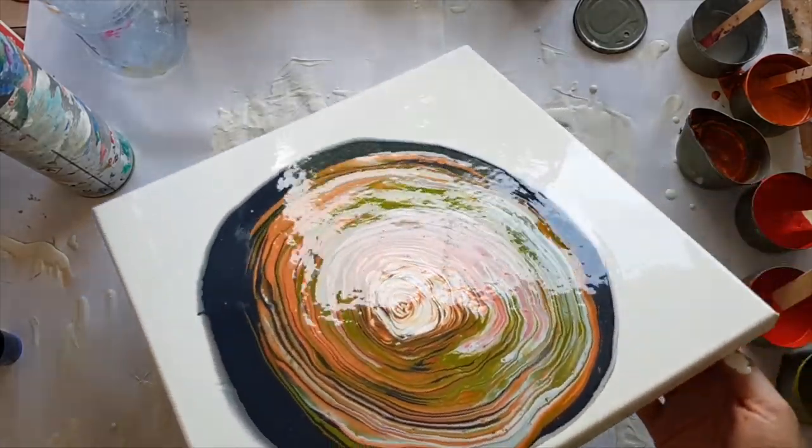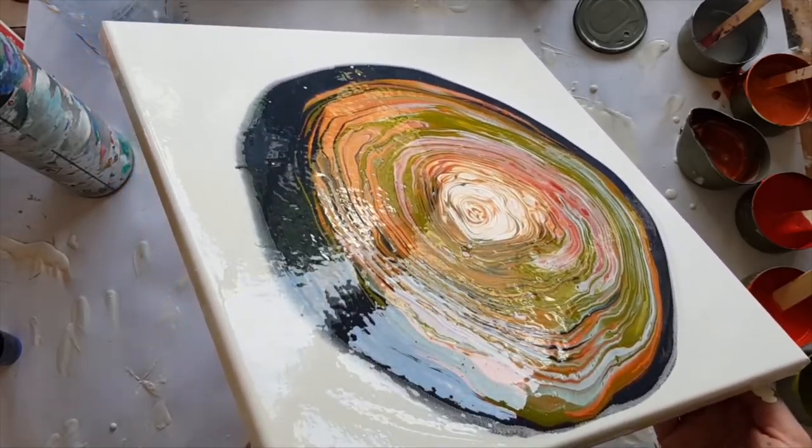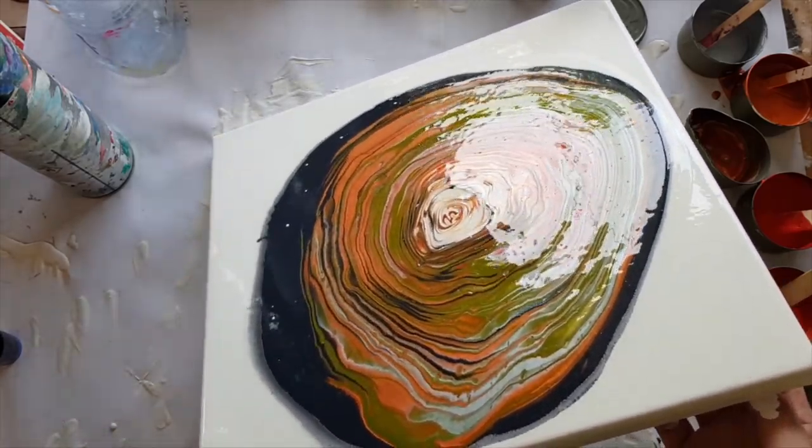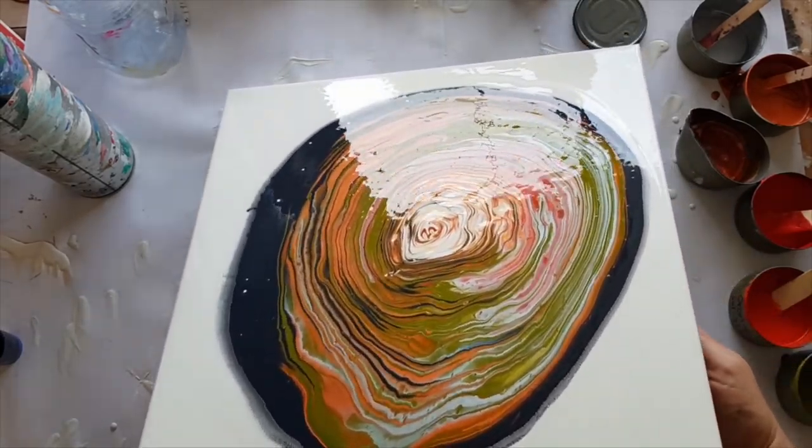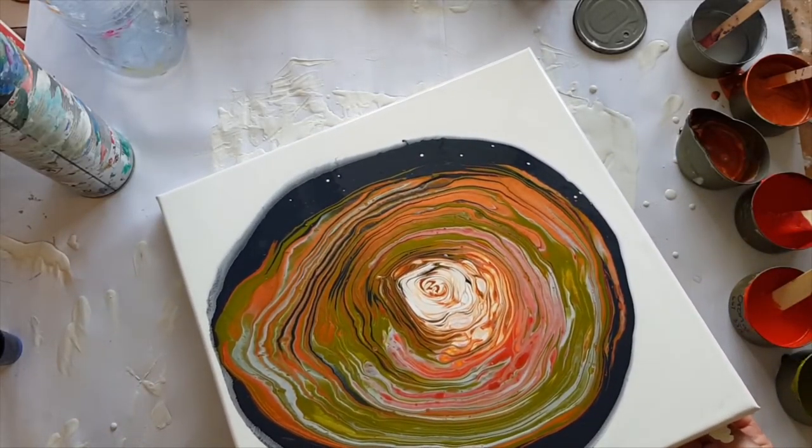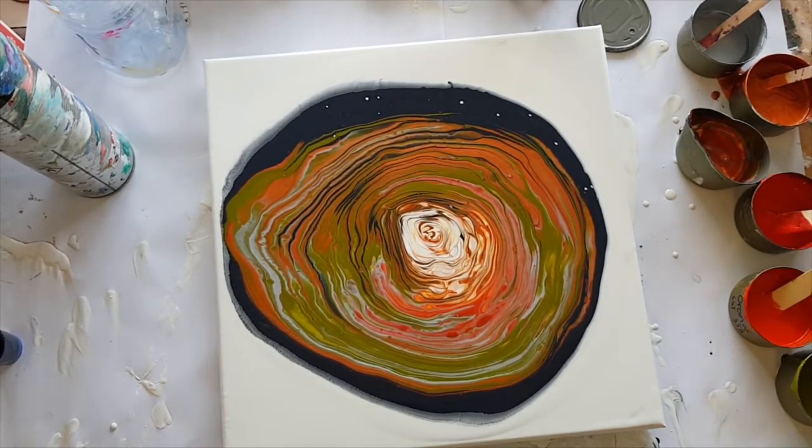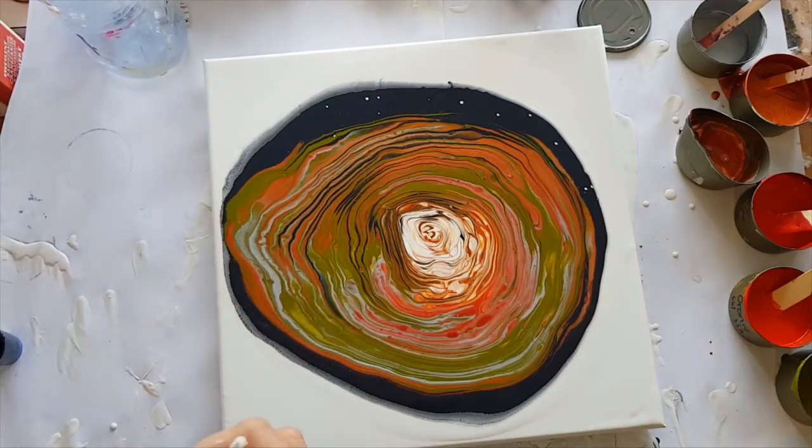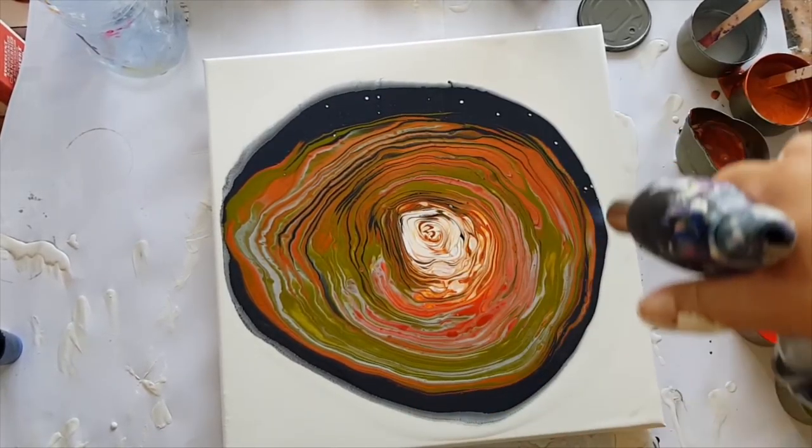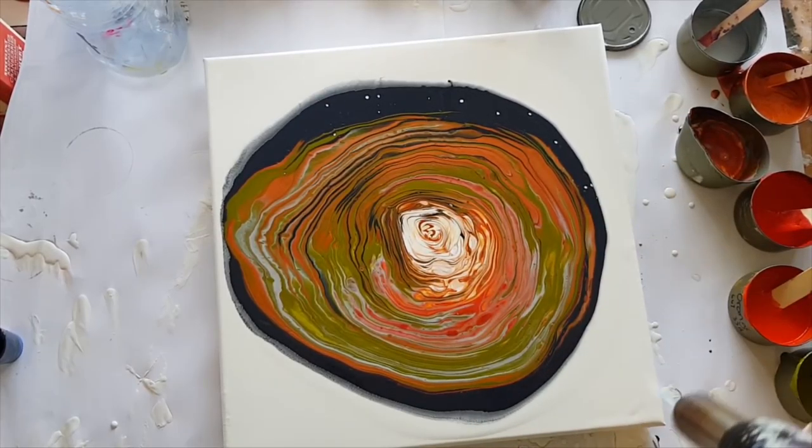The 50/50 orange in the middle there is looking quite pink. Definitely seeing some cells. I'm going to torch it next. See if we get any more cells coming up. Plenty of air bubbles showing up.